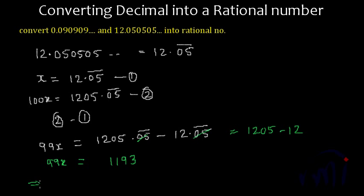So from here we will get x equals 1193 divided by 99, and this cannot be solved further because they don't have any common factor. So this will be the fractional form or the rational number form of 12.05 where 05 is recurring infinite times. And after this we are going to take a different variety of this conversion. So keep watching Math Smart and bye-bye till then.